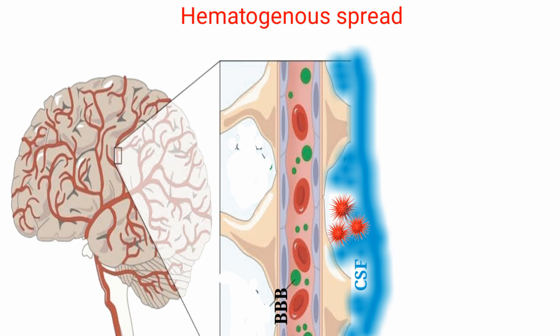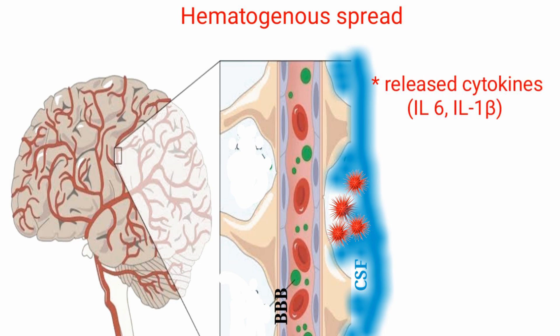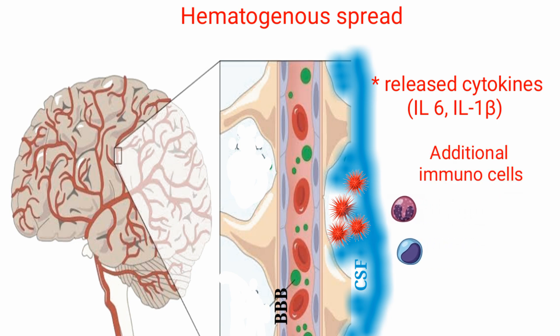Once the bacteria reach the cerebrospinal fluid, they begin multiplying. Soon enough, the handful of white blood cells present in the cerebrospinal fluid identify the pathogen and release cytokines like interleukin-1 beta and interleukin-6 to recruit additional immune cells.